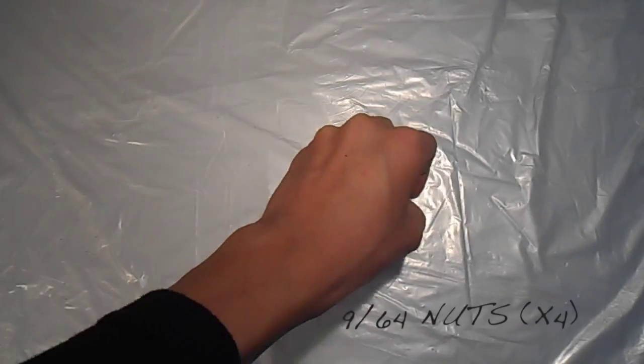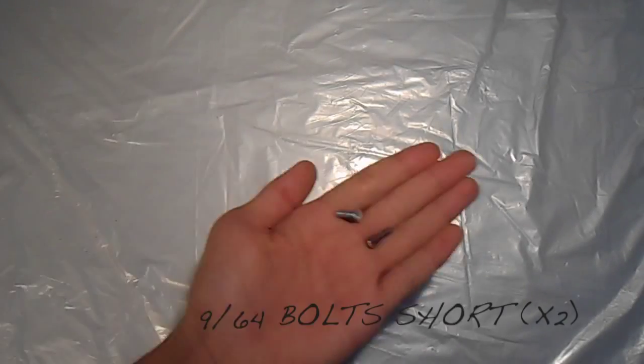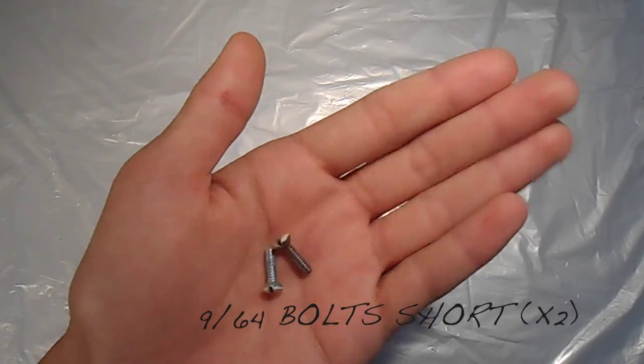Two-inch PVC pipe, about a dollar. One-inch PVC pipe, about a dollar. Half-inch PVC pipe, about a dollar. A small ball bearing, smaller than one-half inch. 9/64 inch nuts, you need four of them. I only have three. 9/64 inch bolts, long. 9/64 inch bolts, short. And that should be it.